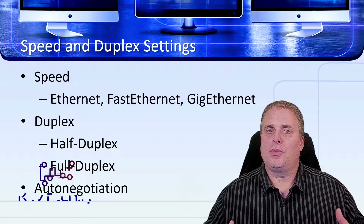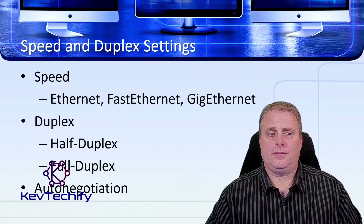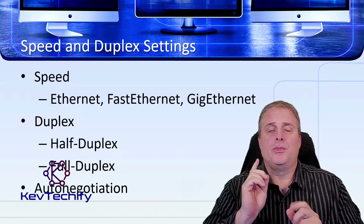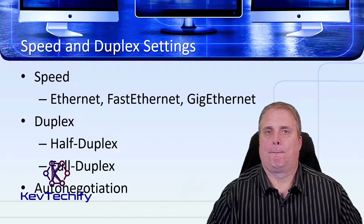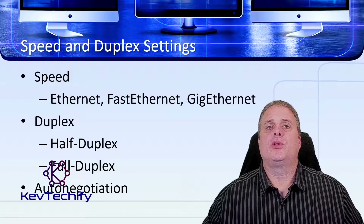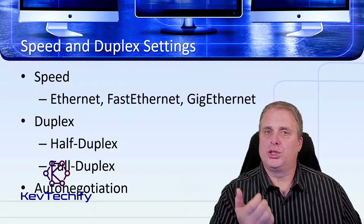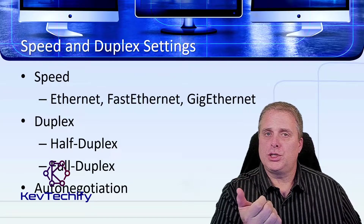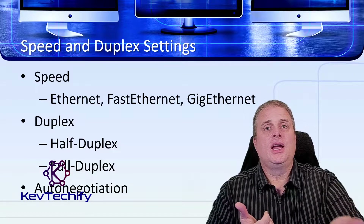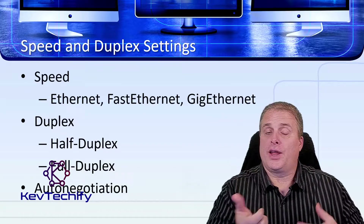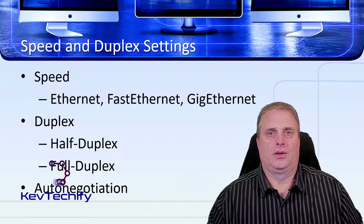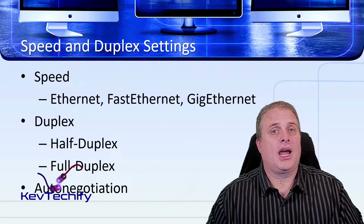We also look at duplex — talking about how communication can happen. With full duplex, communication happens in both directions simultaneously. With half duplex, communication only happens in one direction at a time. Half duplex is like a walkie-talkie or CB radio where you push a button to talk — when you have that button pushed, you can't hear what's being broadcast, but once you release it, the other person can talk and you can hear them. Full duplex is like talking on a telephone, where you can talk and listen at the same time.